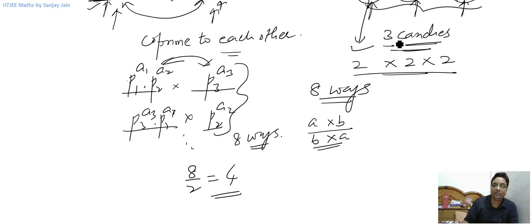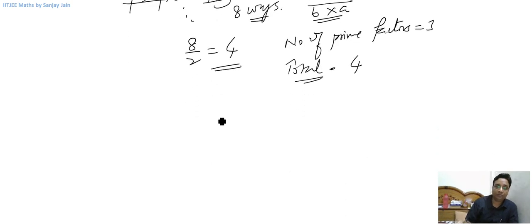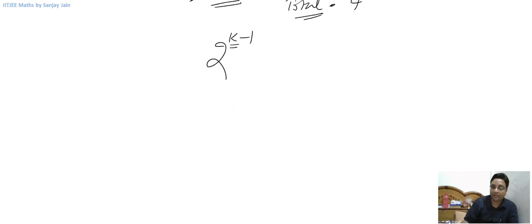So if the number of prime factors is 3, the total number of ways is 4. In general form, the total number of ways is 2 raised to power k minus 1, where k is the number of distinct prime factors.